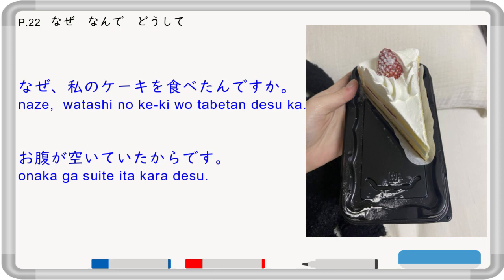Naze, nande, and dooshite — all of these mean 'why'. Dooshite can also mean 'how come'. For example: 'Naze watashi no keiki wo tabetan desu ka?', 'Nande watashi no keiki wo tabetan desu ka?', or 'Dooshite watashi no keiki wo tabetan desu ka?' — why did you eat my cake? You can answer: 'Onaka ga suite ita kara desu' — because I was hungry.